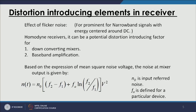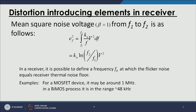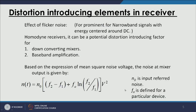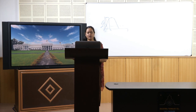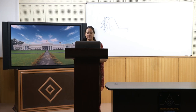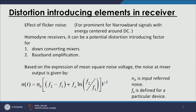Based on the expression for the mean square noise voltage, the mixer output noise is given by an expression where N0 is the noise at the input referred to the input, and FA is the defined parameter — 1 MHz for MOSFET and 48 kHz for BiMOS devices. The noise is directly proportional to FA and the square of the voltage.